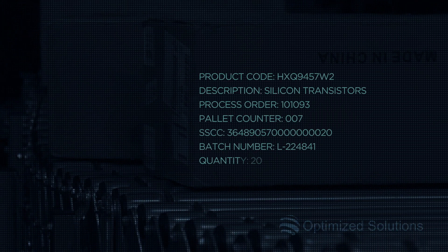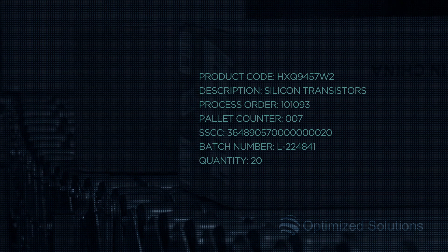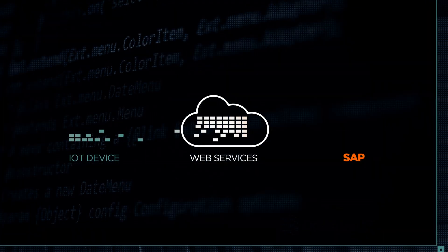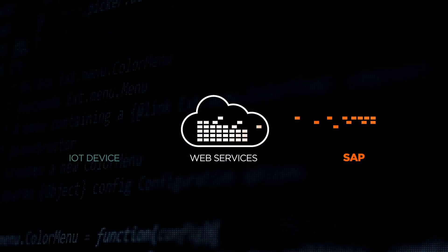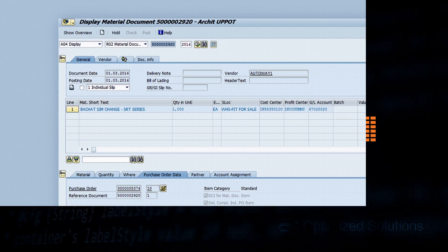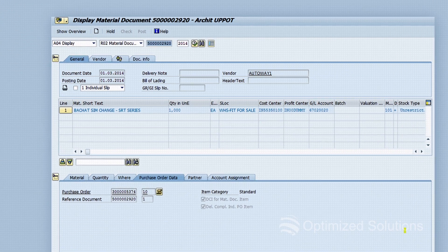The image is translated into data pertaining to quantity, unit, and other details in a message format via IoT devices. The data is transferred to SAP via web services and creates a GR postings document in SAP.